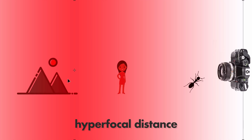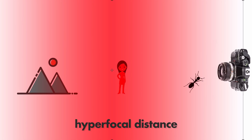When focused at infinity, infinity is sharp and the person is kind of sharp, and quite a lot in the frame is sharp. But we're actually throwing away half the focal plane - everything on the near side is unused focal plane. So if we want to use that, we need to come up with a definition of what is in focus and what is not. This is a gradual scale, so it's a matter of definition where sharpness ends.